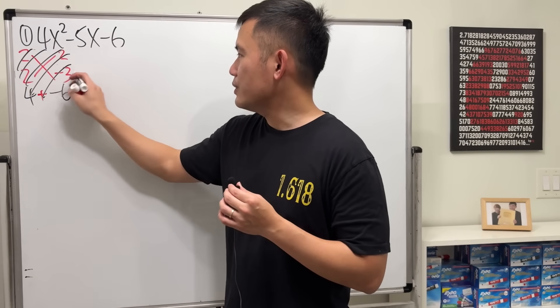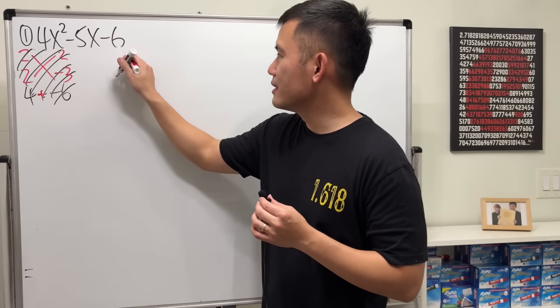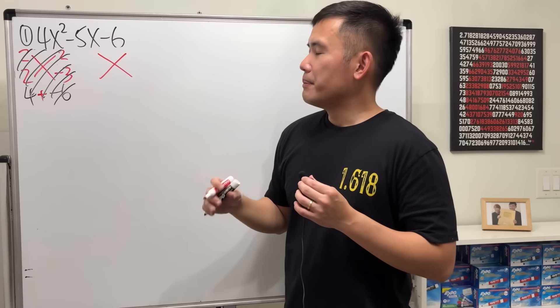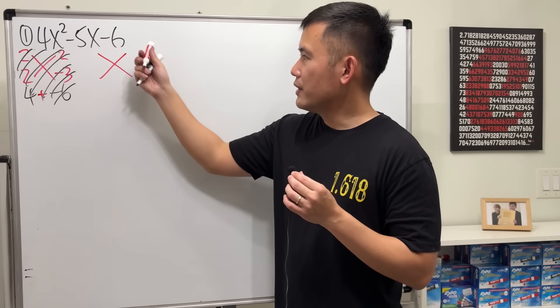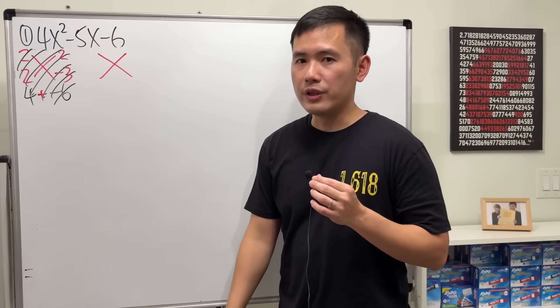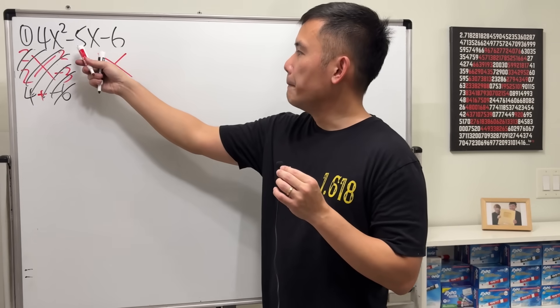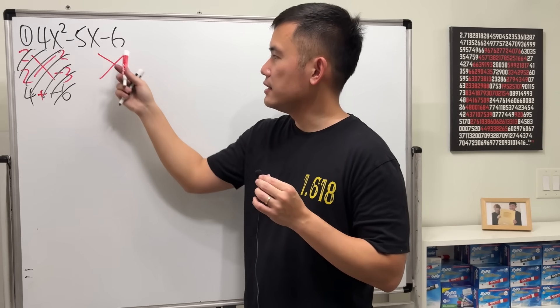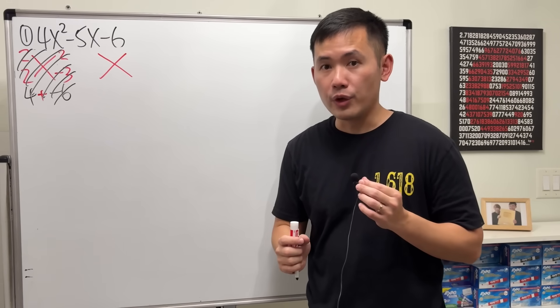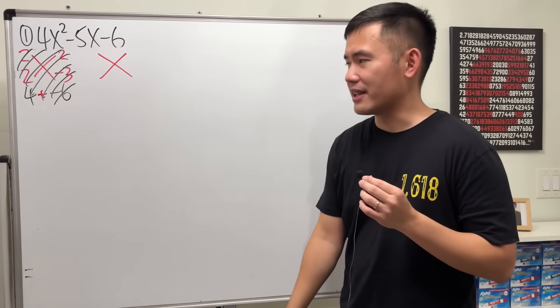So erase it or cross it out. Then try another combination. By the way, if you want to see if a quadratic trinomial can be factored or not, you should compute b squared minus 4ac to see if the result is a perfect square or not. But we can talk about that in another video.